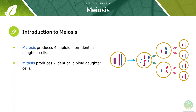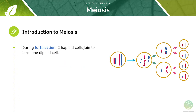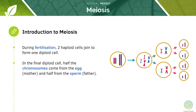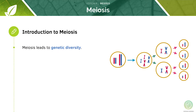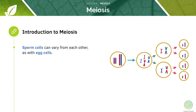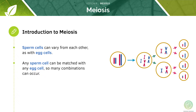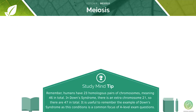Whereas mitosis will produce two identical diploid daughter cells. Therefore, during fertilization, when the sperm and egg fuse, two haploid cells join to form one diploid cell. In the final diploid cell, half the chromosomes come from the egg, which is the mother, and half come from the sperm, which is the father. Meiosis leads to genetic diversity; the four daughter cells produced are not genetically identical. In Down syndrome, there is an extra chromosome 21, so there are 47 in total — a common focus of A-level exam questions.